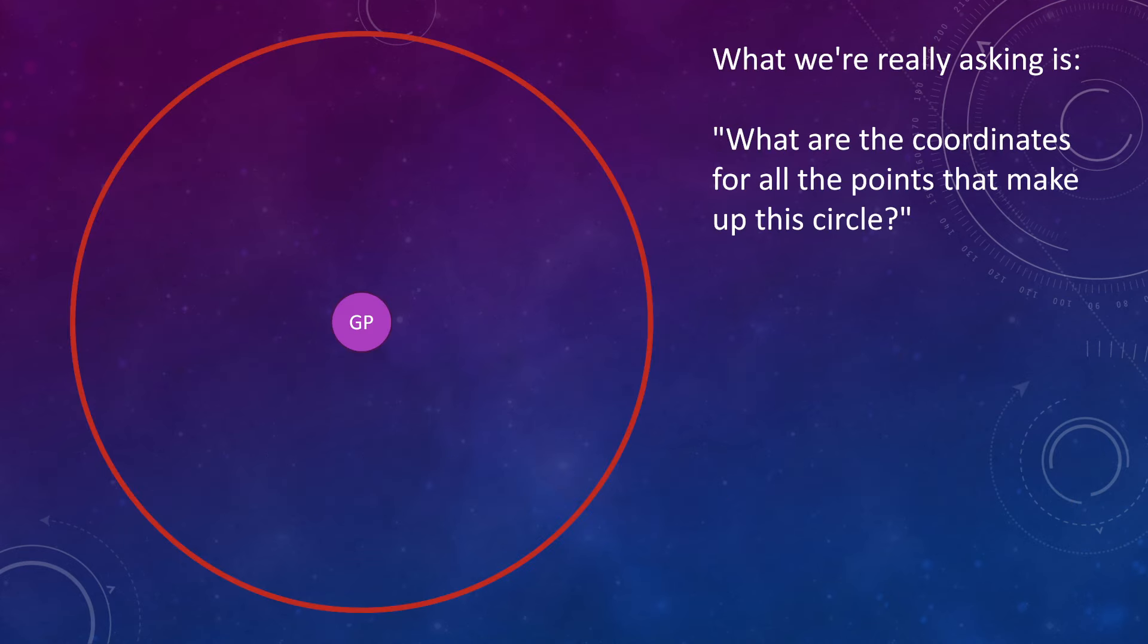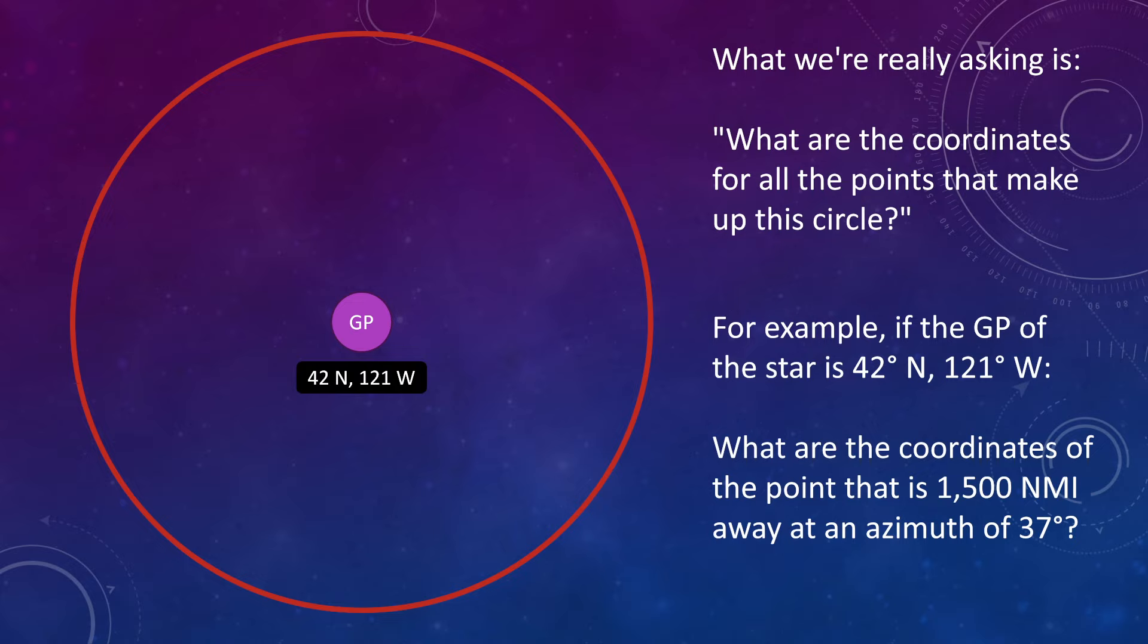Because what we're really asking is what are the coordinates for all the points that make up this circle? So for example, and these again are completely made up numbers, we've got the GP of the star at 42 north 121 west and we want to know what are the coordinates of the point that is for example 1500 nautical miles away at an azimuth of 37 degrees, or more fully what are the coordinates for all the points that are 1500 nautical miles away in every direction. But just for this example we're going to find the coordinates of one point at an azimuth of 37 degrees.